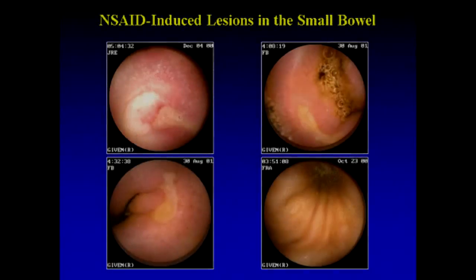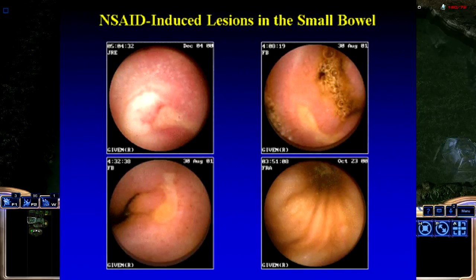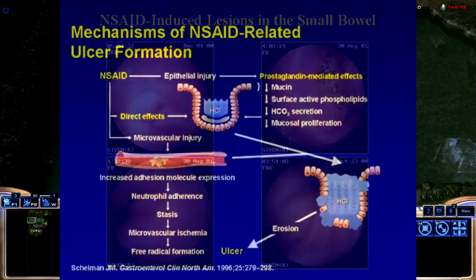The ulcers associated with NSAIDs occur in 20% of NSAID users. This occurs as a result of the suppression from COX inhibitors on the synthesis of gastric prostaglandins, which are important in mucosal integrity.